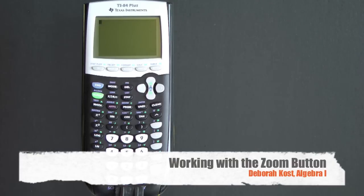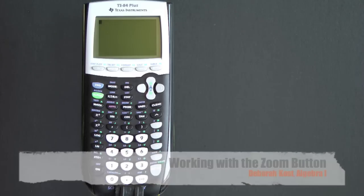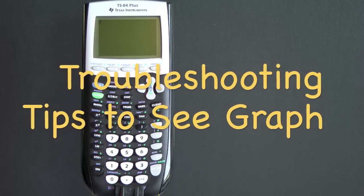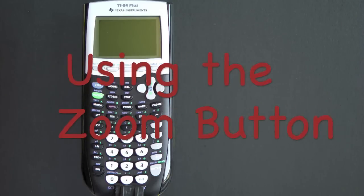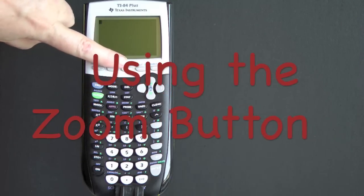Sometimes when you enter an equation or a system of equations into y equals, nothing comes up on the graph. There are several steps of troubleshooting you can take to be able to see your graph. The first and easiest fix is to learn how to use the zoom button.